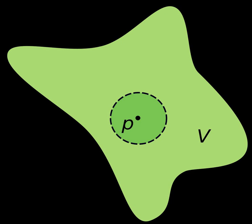A space is locally path-connected if and only if for all open subsets U, the path components of U are open. Therefore the path components of a locally path-connected space give a partition of X into pairwise disjoint open sets. It follows that an open connected subspace of a locally path-connected space is necessarily path-connected. Moreover, if a space is locally path-connected, then it is also locally connected, so for all x in X, C(x) is connected and locally path-connected, hence path-connected, i.e., C(x) equals PC(x). That is, for a locally path-connected space the components and path components coincide.